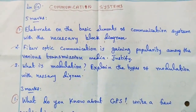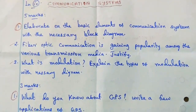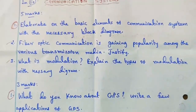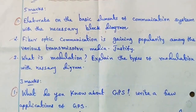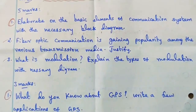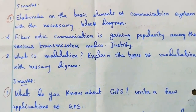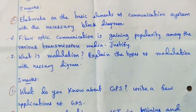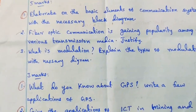Average, slow, and below-average students should focus on the 1st question. 2nd question: fiber optic communication is gaining popularity among various transmission media — justify. 3rd question: what is modulation? Explain the types of modulation with the necessary diagram.